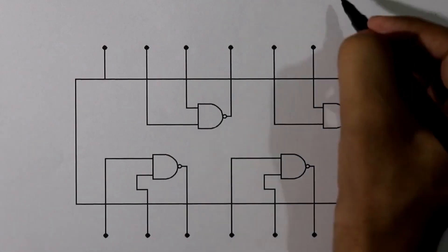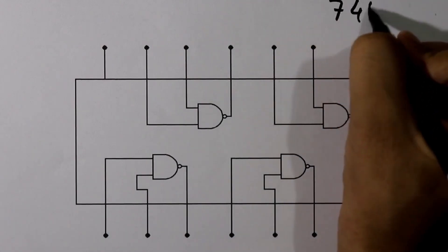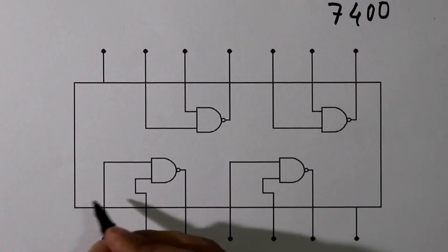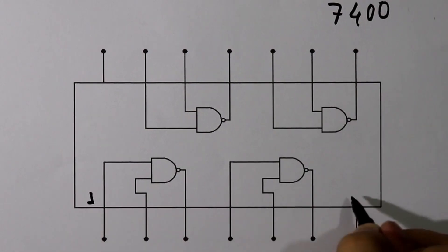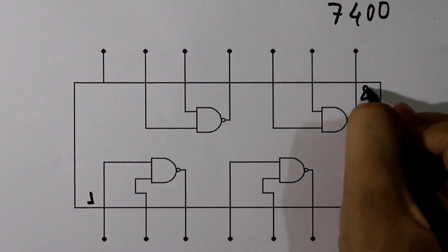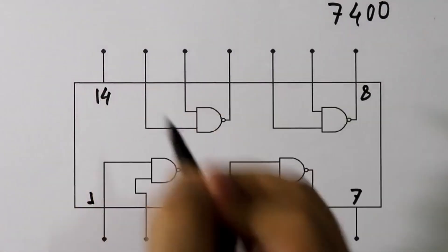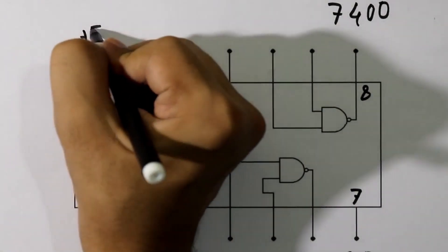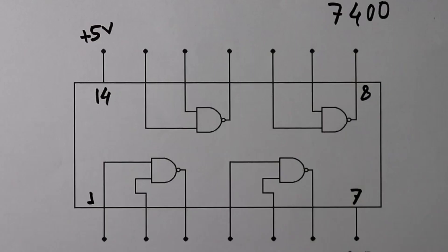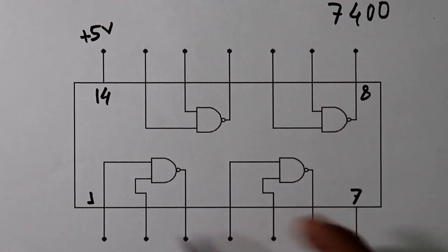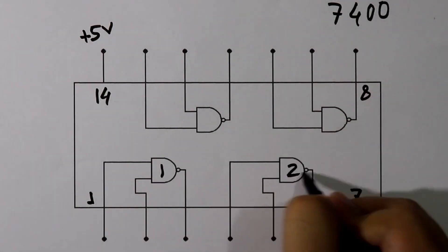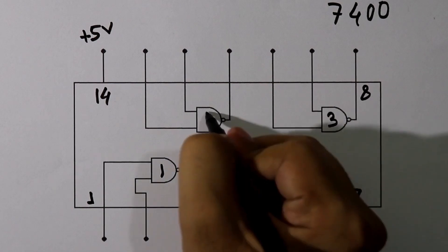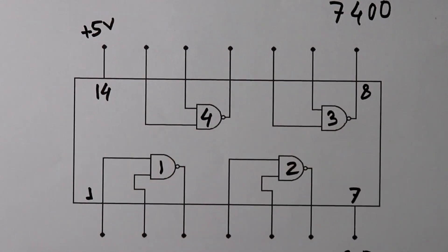Now let's see the pin diagram of IC 7400. Pin number 7 is connected to ground and pin number 14 is connected to plus 5 volts. IC 7400 contains 4 NAND gates: NAND gate 1, NAND gate 2, NAND gate 3, and NAND gate 4.